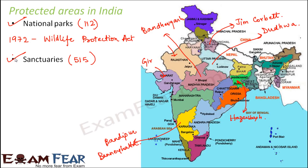Let us now name some of the animal sanctuaries in India. In Bihar you have the Rajgir Animal Sanctuary. In Chhattisgarh you have Badalkol Sanctuary. In Goa you have Salim Ali Bird Sanctuary. In Orissa you have the Chilka Bird Sanctuary. In Himachal Pradesh you have Naina Devi Animal Sanctuary.